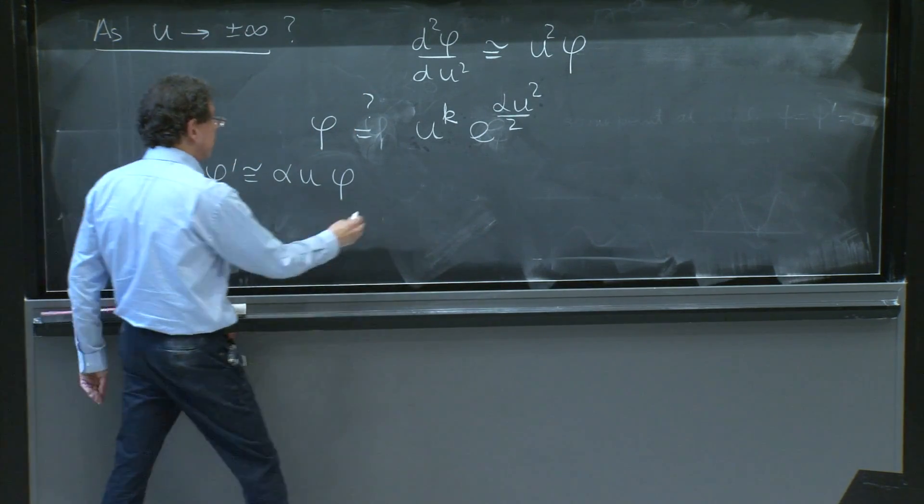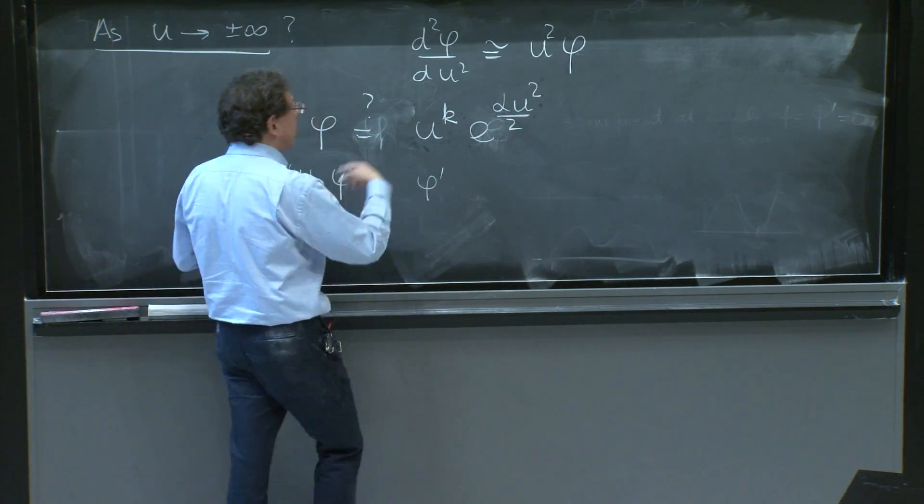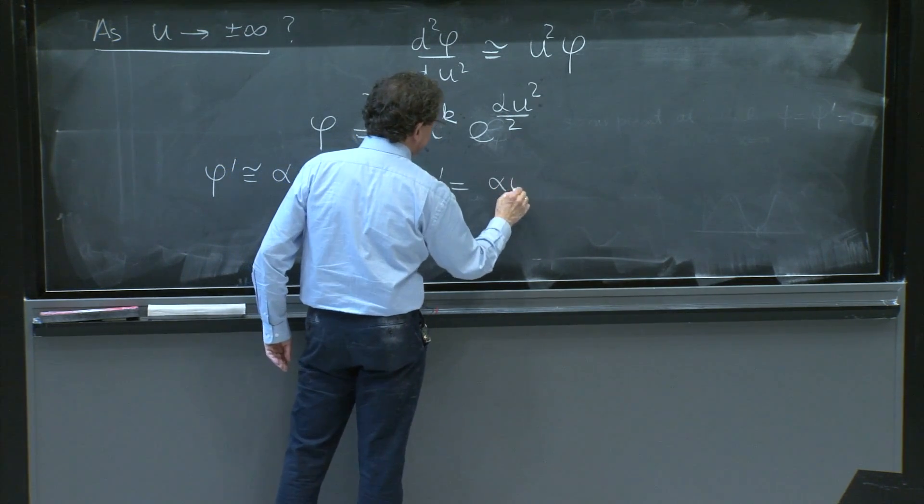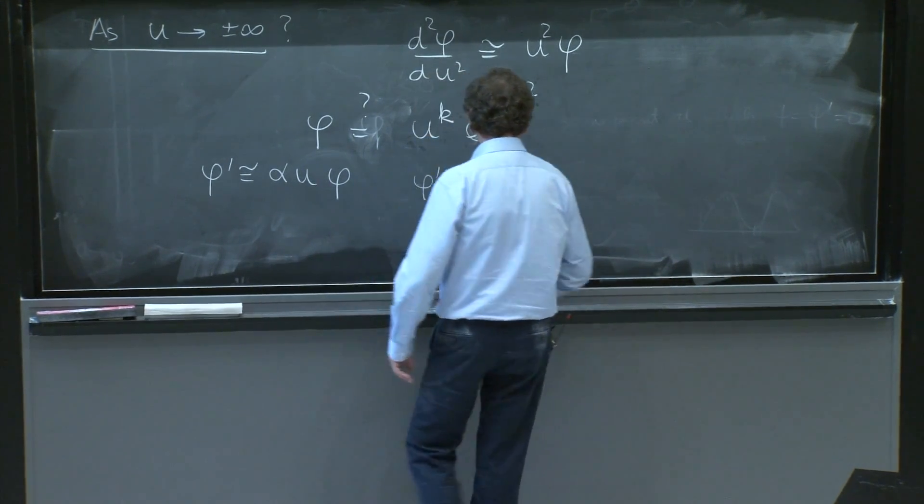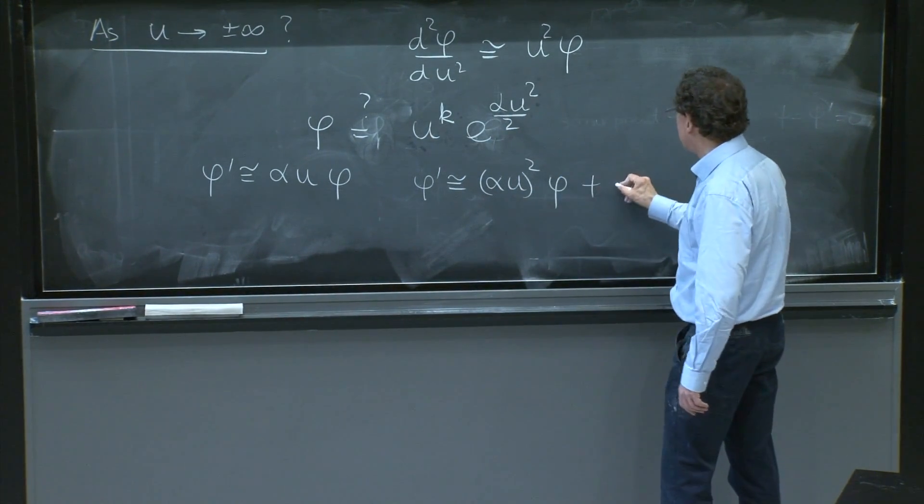So if you differentiate twice, each time you differentiate, you get a factor of alpha times u squared φ, roughly. This is plus sub-leading.